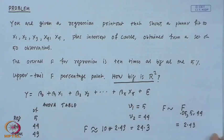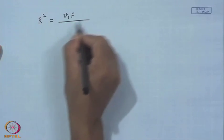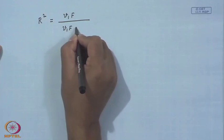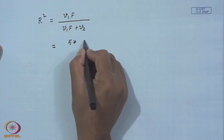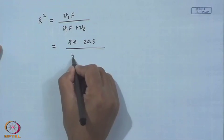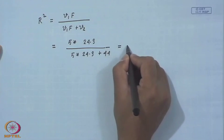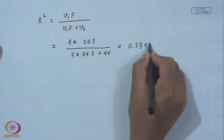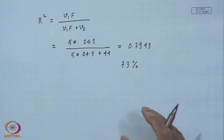Using the formula R² = V₁F / (V₁F + V₂), with V₁ = 5, F = 24.3, and V₂ = 44: R² = (5 × 24.3) / (5 × 24.3 + 44) = 121.5 / 165.5, which equals approximately 0.7343. That means 73 percent of the total variability in the response variable has been explained by the fitted model, which is quite good.